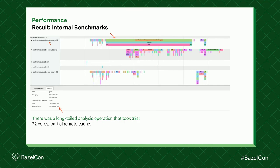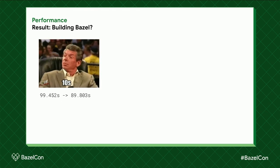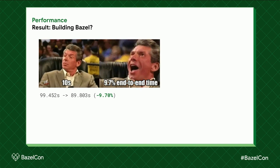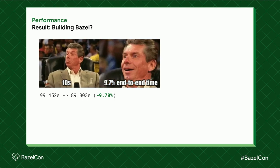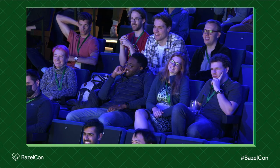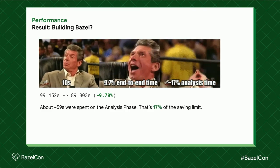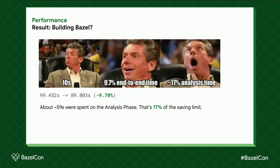Since we're at BazelCon, it would be a bit uncool to only show internal benchmarks, so I did a benchmark with the Bazel codebase itself: `bazel build //...`. We saw a 9.7% improvement with full remote cache, saving around 10 seconds. We're not expecting to save any execution time — it's all coming from analysis. We spent about 59 seconds on the analysis phase, and SkyMelt saved about 17% of that analysis phase time.